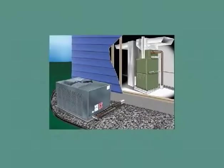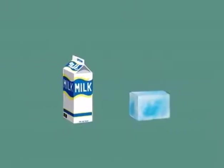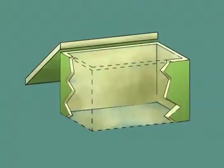Air conditioners can transfer heat because heat energy always travels from warmer objects to colder objects. When two objects at different temperatures are placed together, the heat energy from the warmer object will flow to the colder object. A cooler is a great example of how heat transfers from hot to cold.